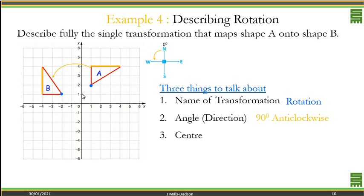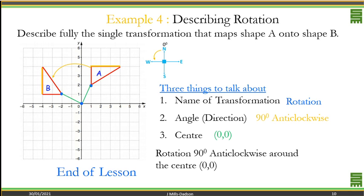Where should this be? This point doesn't make sense because this line is shorter than this line. But what about this point? That's it. So like I said, continuous practice will help you really spot it clearly. So we now know that the center is 0,0. So we see rotation 90 degrees anti-clockwise around the center 0,0.